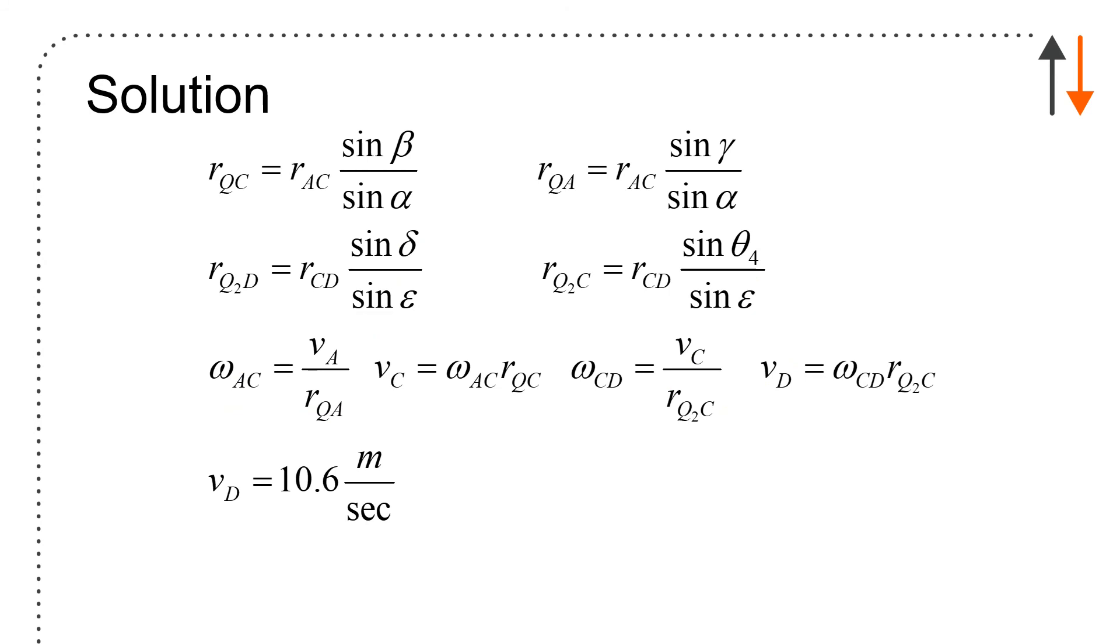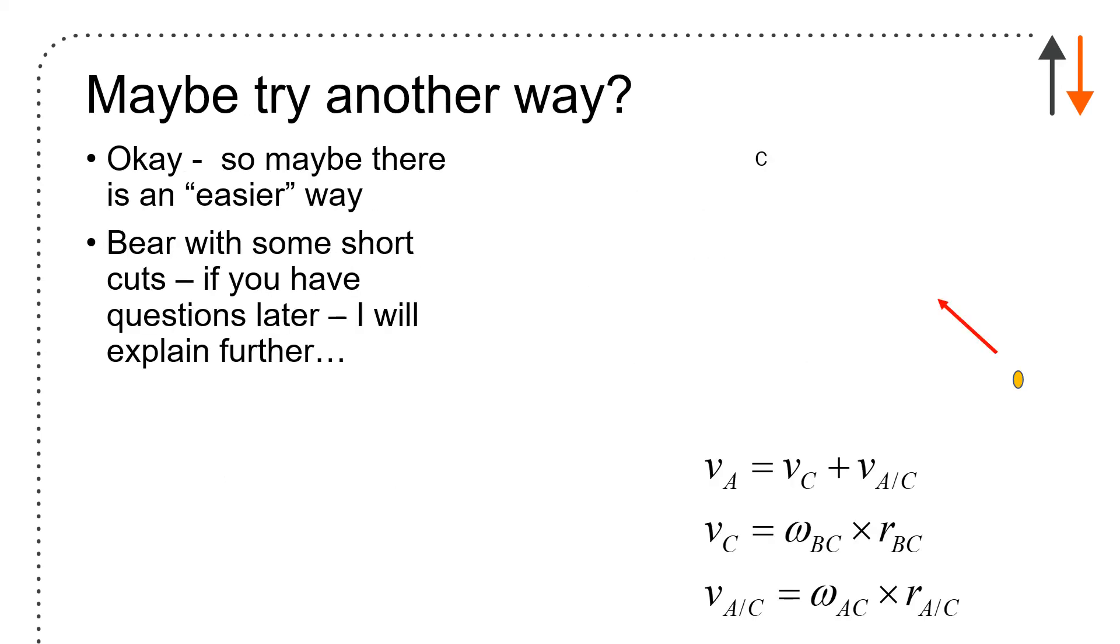I can calculate all of the distances using the sine law. From this, I can calculate RQC, RQTD, RQAD, Q2DC, all of this. I get omega AC, omega BC, omega CD, velocity of D, which is equal to 10.6 meters per second. It's not a very satisfying problem. And it's not a problem that lends itself well to instantaneous centers.